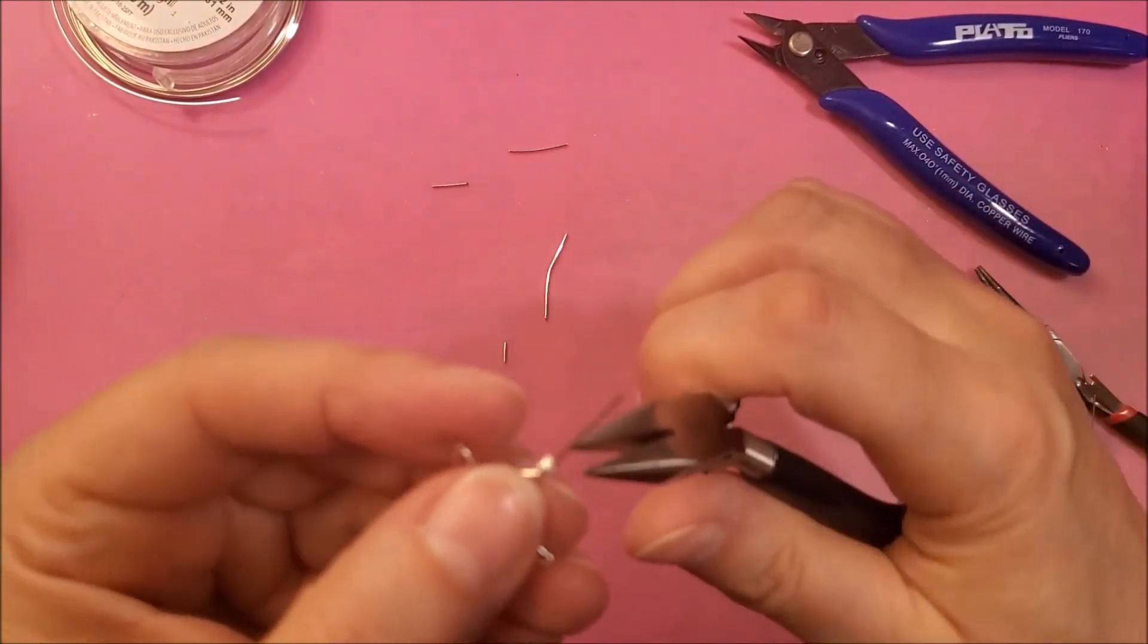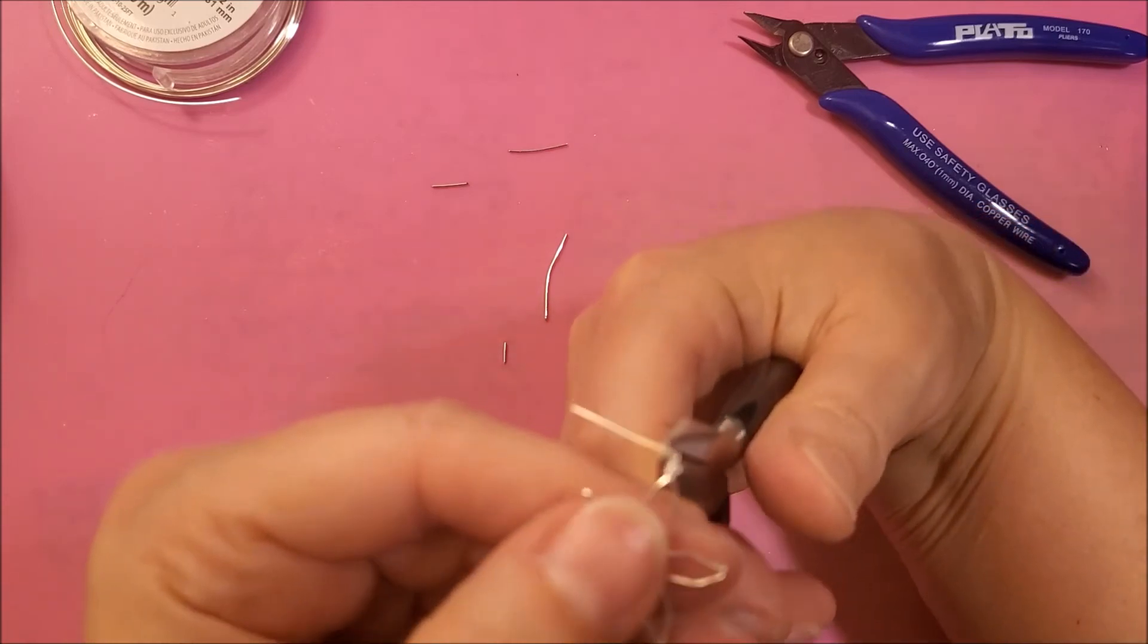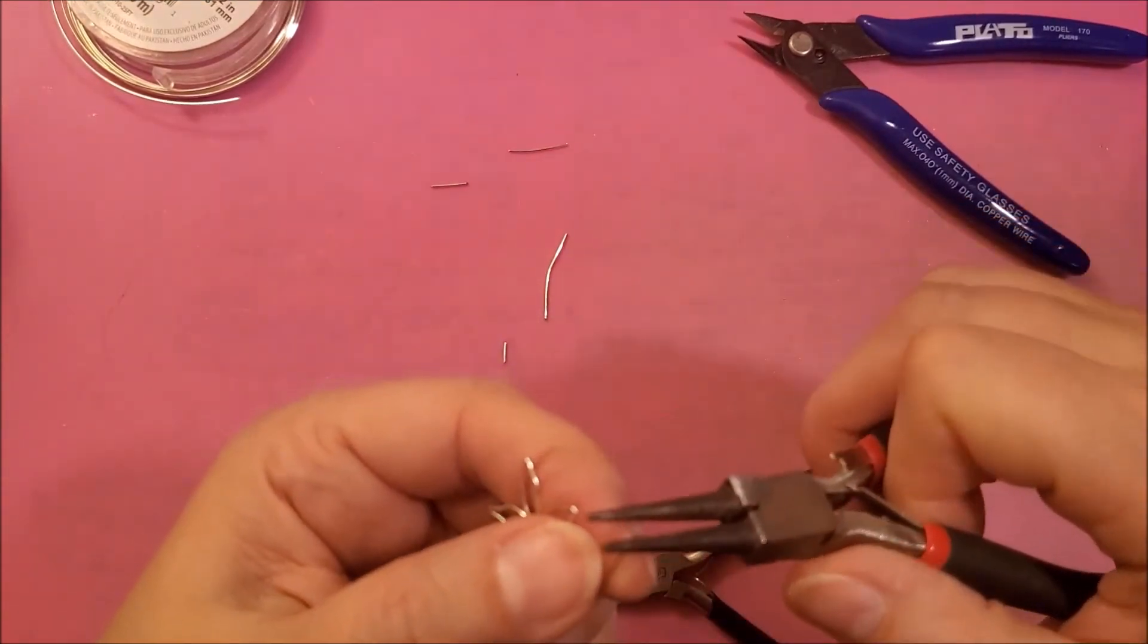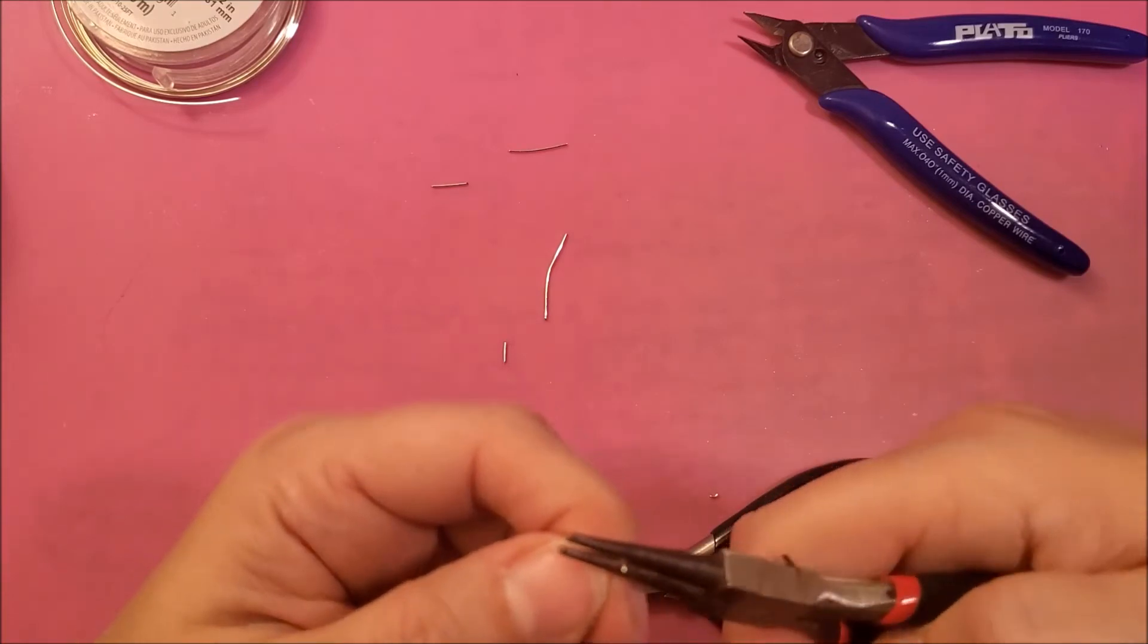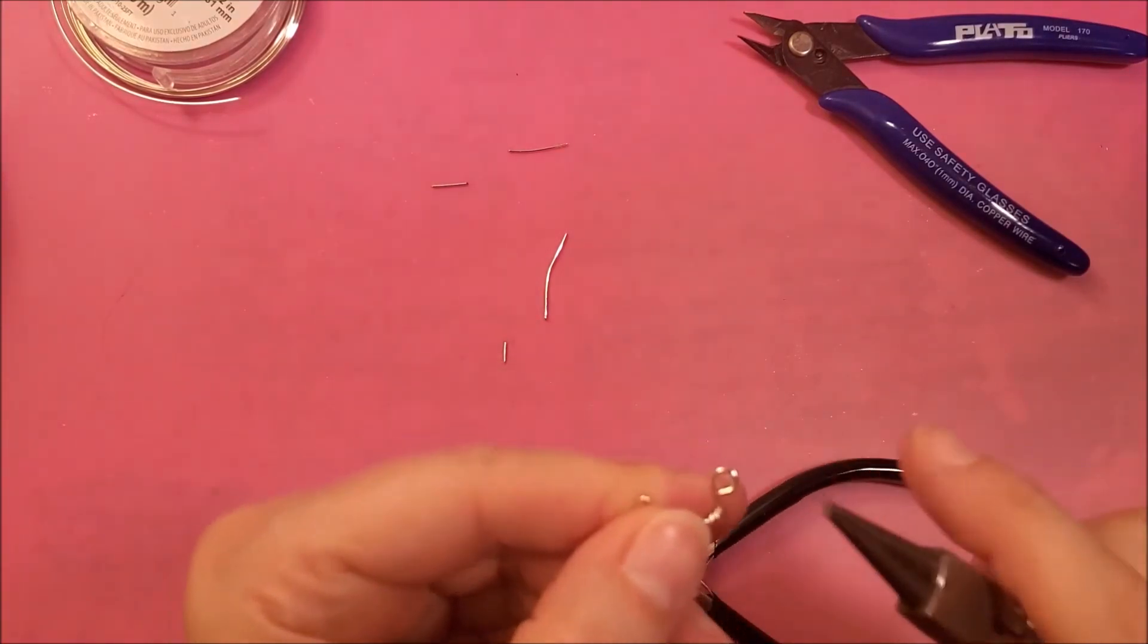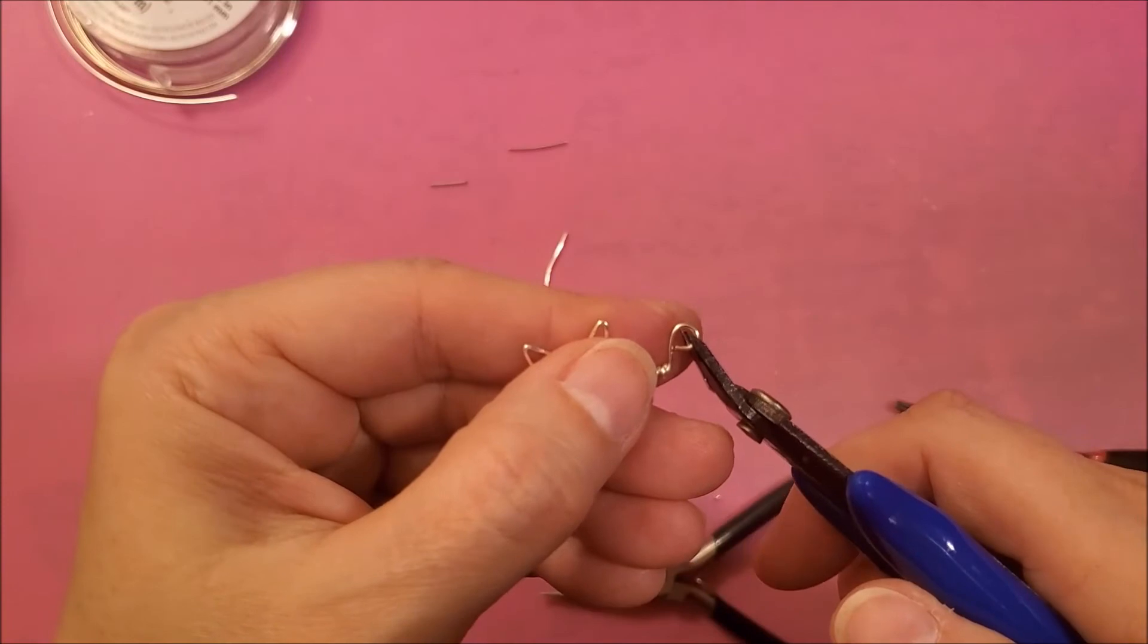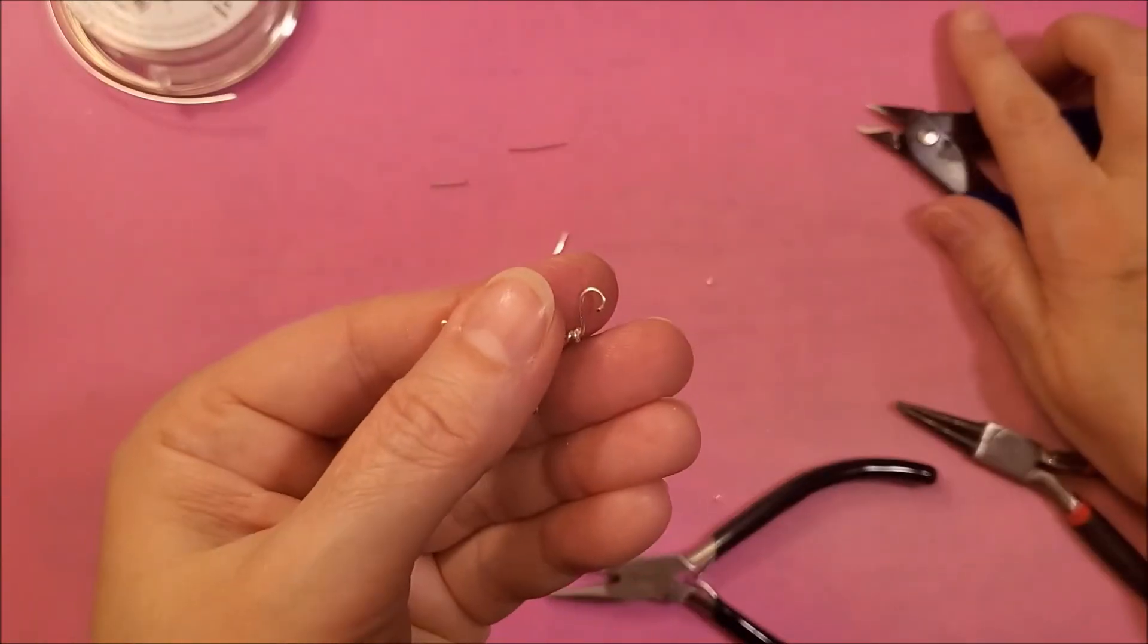Then take your chain nose pliers and bend it over. Take your round nose pliers and then start doing your loop for the bail. So now, if it's too long again, I said you can just clip a piece off like so.